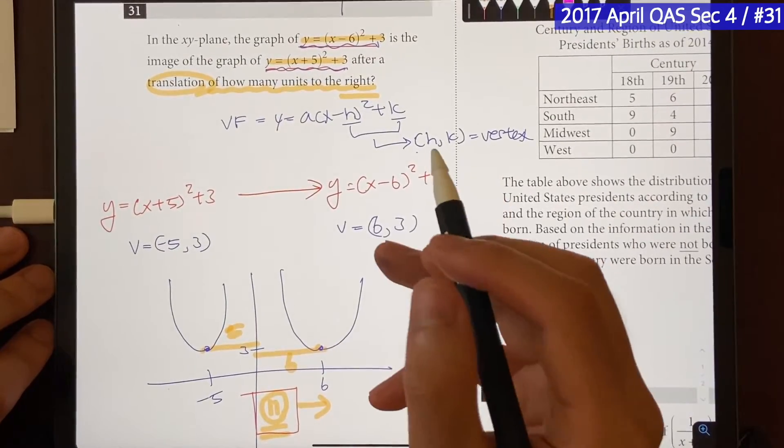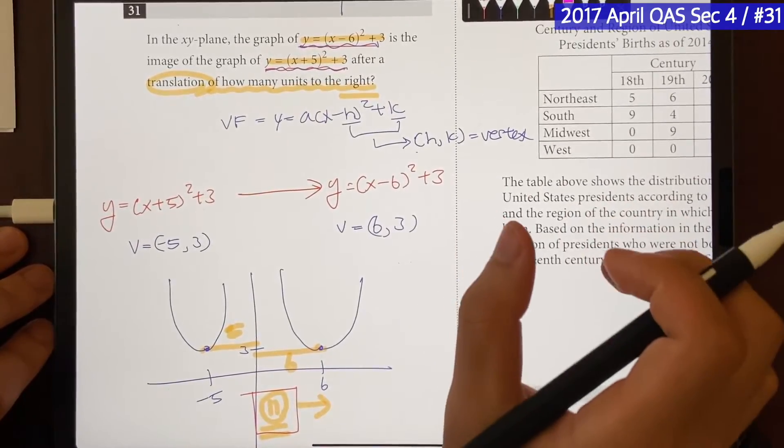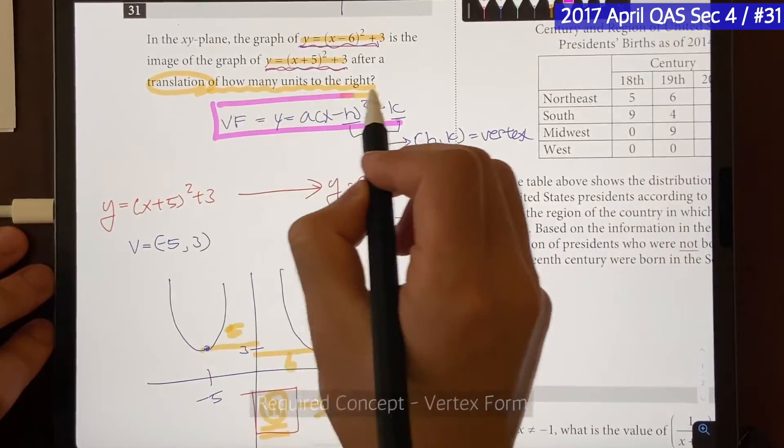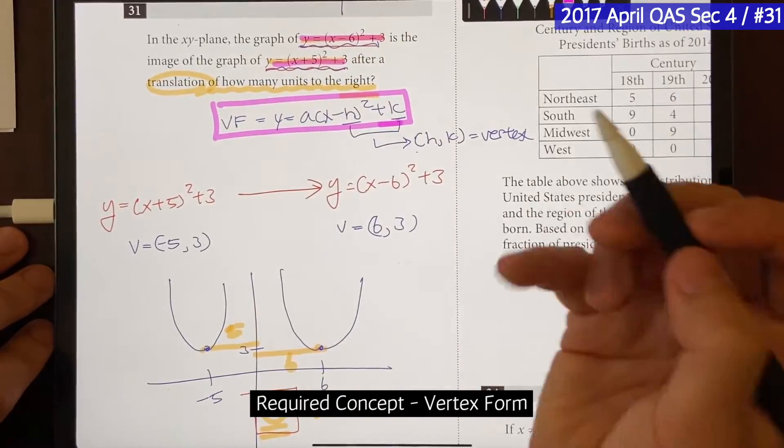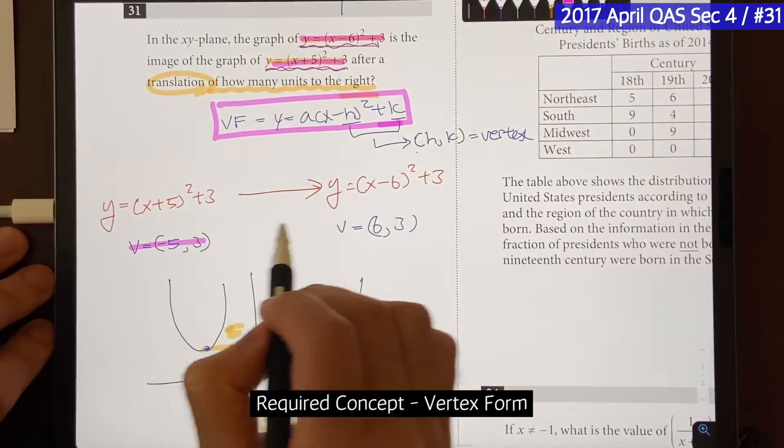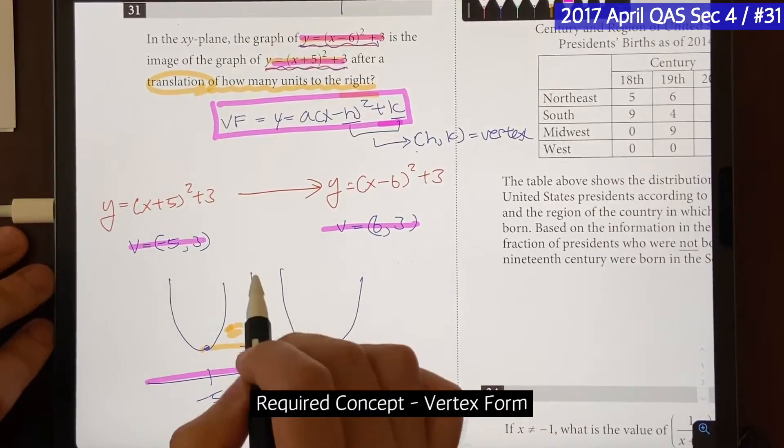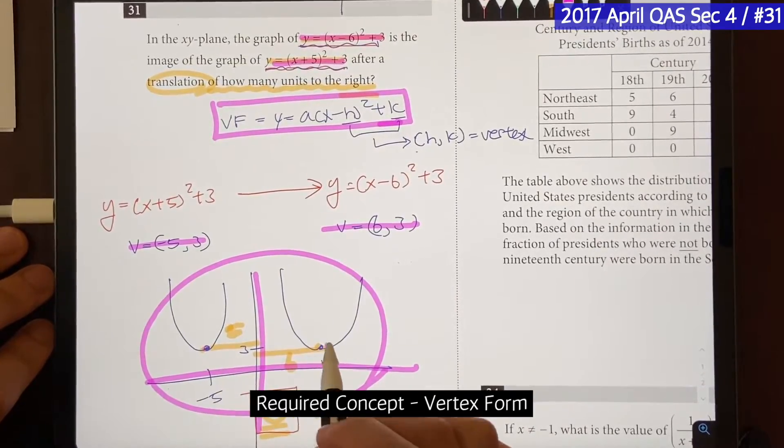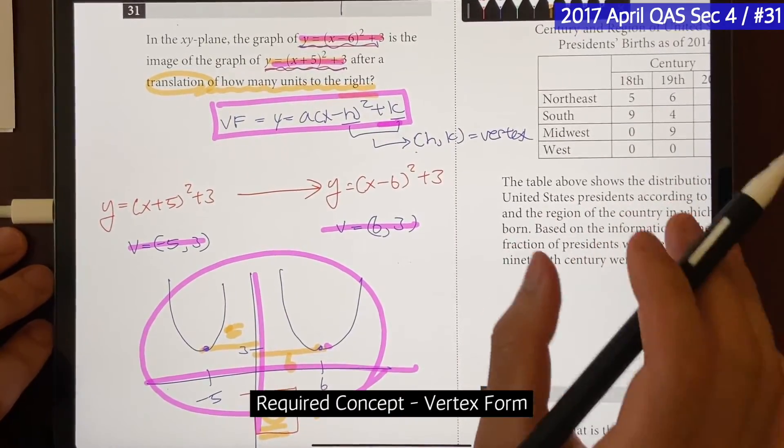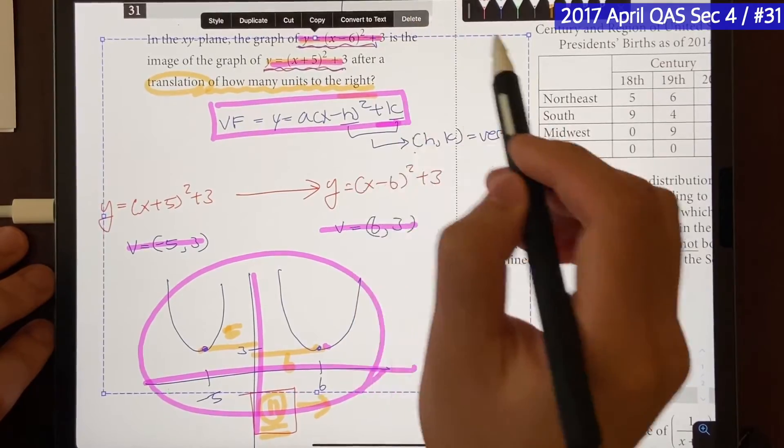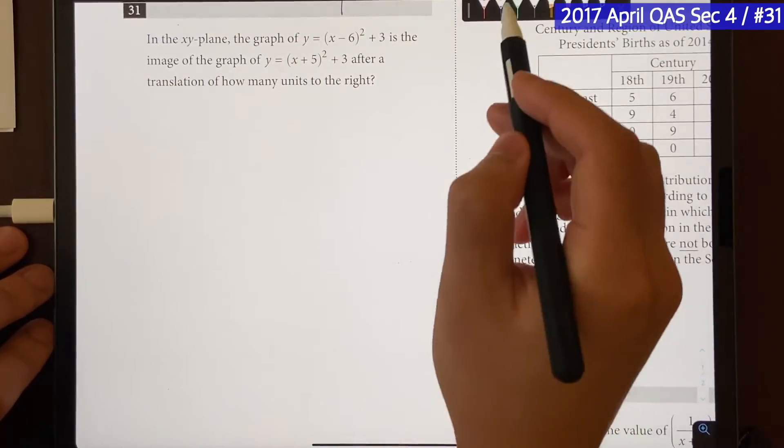In order for you to solve this question the correct way and the fastest way possible, you're going to have to understand what vertex form is. That way, when you look at these two equations, you recognize that they are in the vertex form, and you can recognize where their vertexes are and visualize and see how far apart they are. And without the concept, you won't be able to solve this question quickly. So that's how you would solve quickly, but let's go over what it would look like during the real SAT.